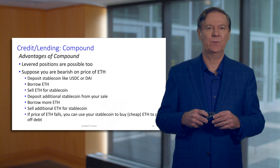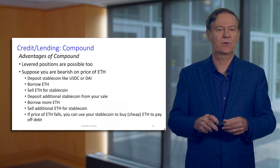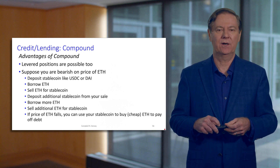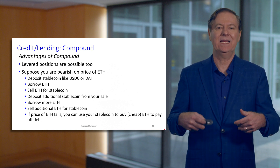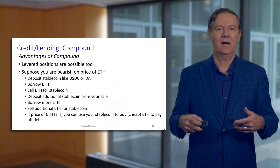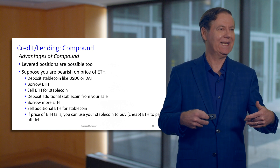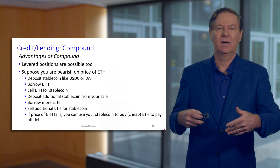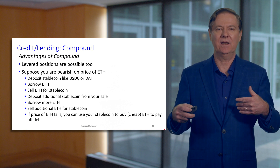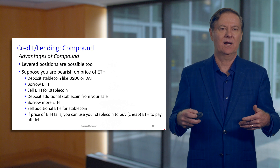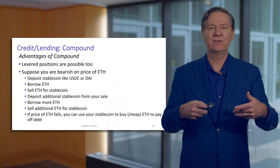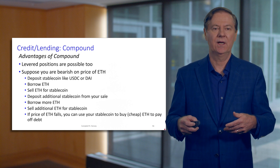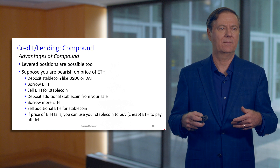For a levered short position: deposit a stablecoin, borrow ETH, sell it for stablecoin, deposit the extra stablecoin and borrow more ETH, then sell that again for stablecoin and deposit even more. This creates a levered position — if ETH's price falls, the profit would be much greater than a simple short. This is how you use the Compound protocol to take bullish or bearish positions.